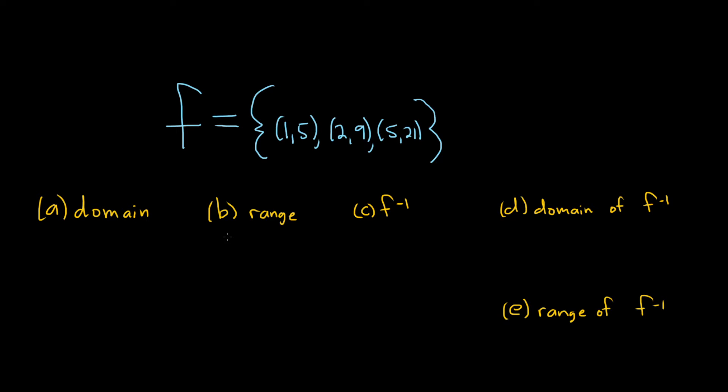In this problem, we're given a function f and we're being asked various questions. So the first question is to find the domain of the function. The domain is the set of inputs. In this case, it's just the set of all x-coordinates. So we use the curly bracket notation. It's all the x's, so 1, 2, and 5. Those are the inputs. So it's {1, 2, 5}, and then we use the curly brackets to close the set.